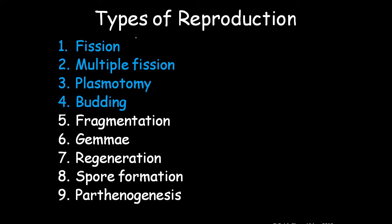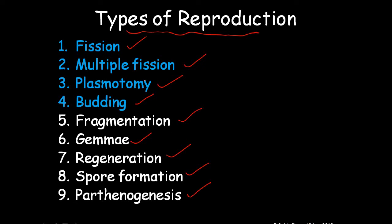Coming to types of asexual reproduction: fission, multiple fission, plasmotomy, budding, fragmentation, gemmae, regeneration, spore formation, and parthenogenesis. In this video we will be covering only the first four types up to budding. In the second video we will be covering fragmentation, gemmae, regeneration, spore formation, and parthenogenesis.